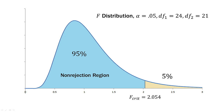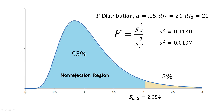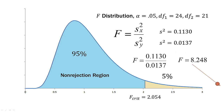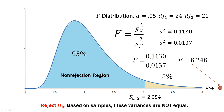So let's go ahead and calculate our F statistic. We have the sample variance of machine one on top and the sample variance of machine two on the bottom — that's only because machine one had the larger variance. That was 0.1130 divided by 0.0137 for machine two, and we come up with an F statistic or test statistic of 8.248. Where does that fall on our distribution? It falls way, way out to the right — it's so large it goes well beyond the critical region. So what do we conclude? We will reject our null hypothesis because it's well into the rejection region. Based on these two samples, these variances are not equal — the difference goes well beyond what we might expect due to sampling error alone.